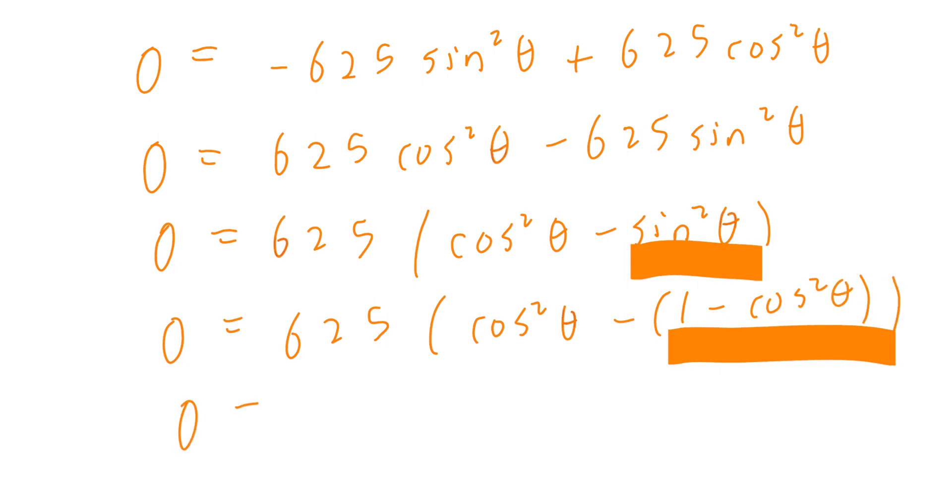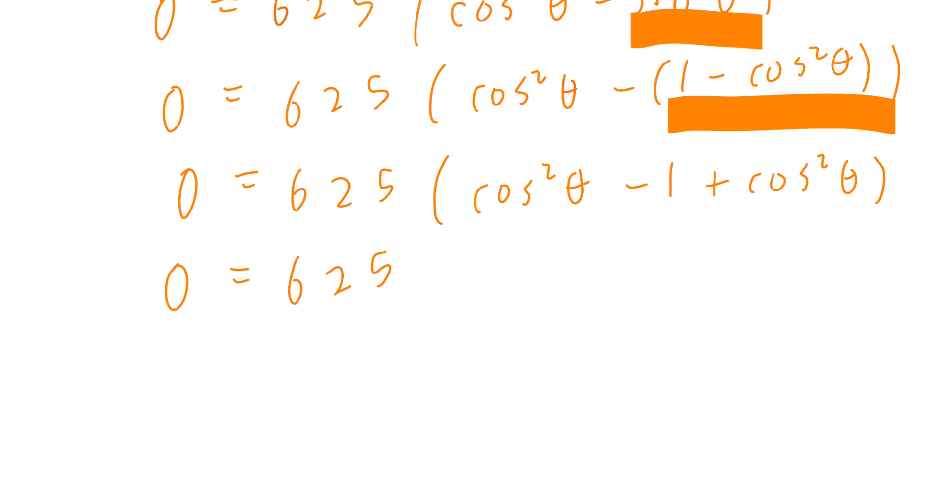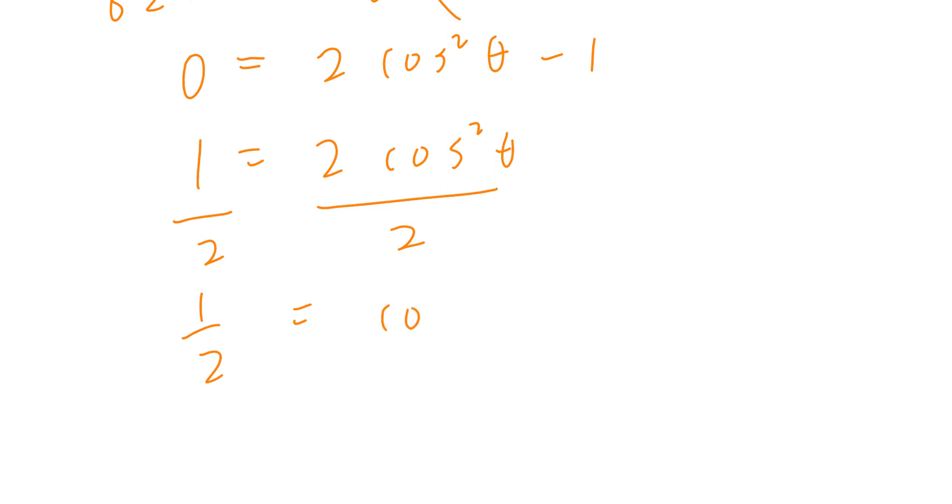So this equals 625 times, if you expand on this, that's cos squared theta minus 1 plus cos squared theta. If you collect like terms, this would give you 0 equals 625 times 2 cos squared theta minus 1. Notice you can divide both sides by 625. On the left-hand side, that's 0. On the right-hand side, I'm going to copy 2 cos squared theta minus 1. I'm going to bring the negative 1 over and isolate for theta.